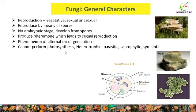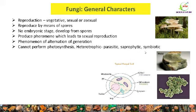As fungi are achlorophyllous, they cannot prepare their own food by photosynthesis. They depend on other organisms or dead and decaying organic matter for food, so fungi are heterotrophic. They may be parasitic, saprophytic, or symbiotic. Parasitic means fungi living on living organisms. Saprophytic means fungi growing on dead and decaying organic matter. Symbiotic is the mode of nutrition in which both host and the other organism benefit. Some fungi are parasitic and can infect the host, causing diseases.